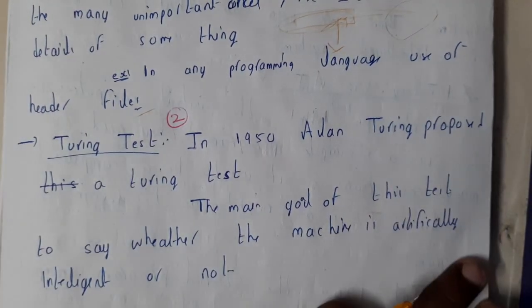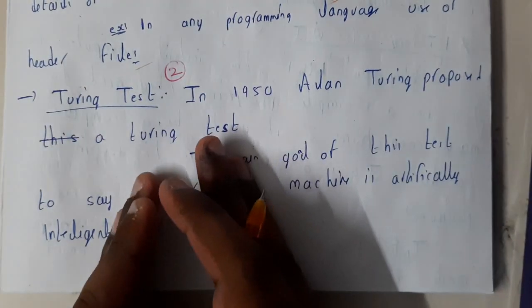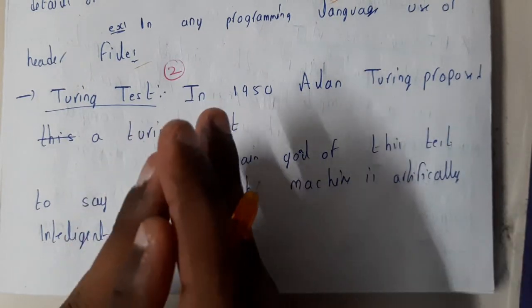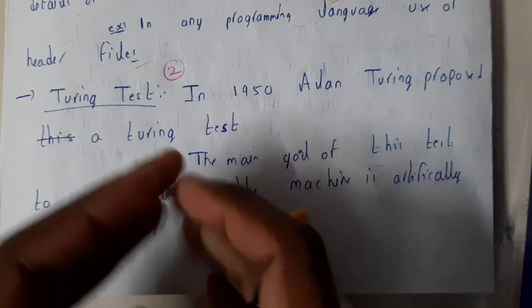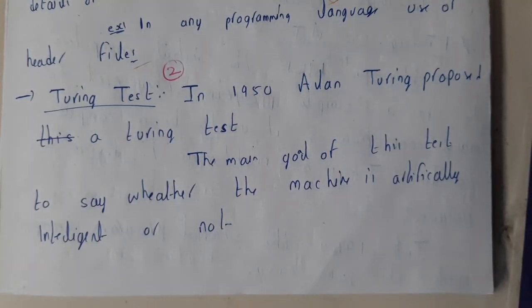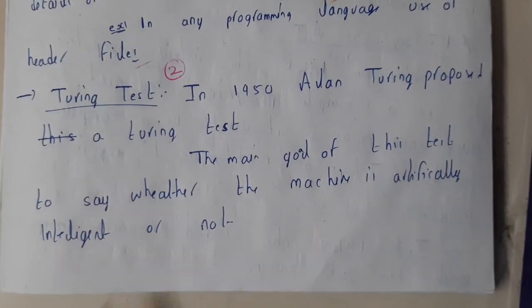Don't worry, it's really simple and easy. The main objective or goal of this Turing Test is to decide if the robot or the artificial intelligent device is acting like a human or not, or whether it is giving the answers as a human or not. So the main goal of the test is to say whether the machine is artificially intelligent or not.